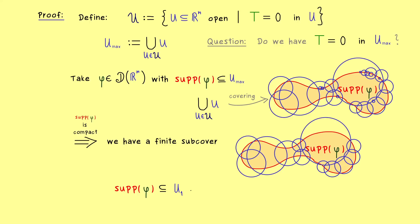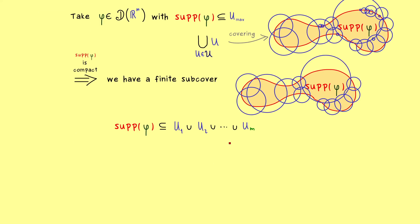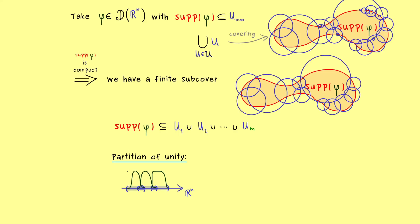Now we can use a technical fact for such a finite union, called the partition of unity. It tells us that whenever we have a finite union of open sets in R^n covering a compact set, we can find finitely many test functions ψ₁, ψ₂, ..., ψ_m that add up to one on that compact set. Each ψᵢ has support inside uᵢ. This is possible because the open sets have overlaps, and the test functions can be chosen so that on the overlap they sum to one — that's why it's called a partition of unity.